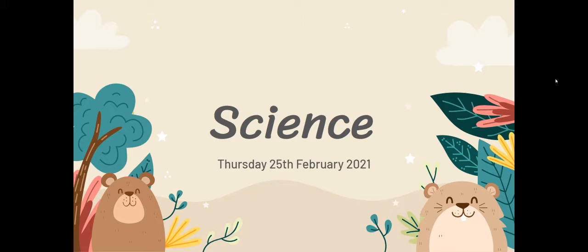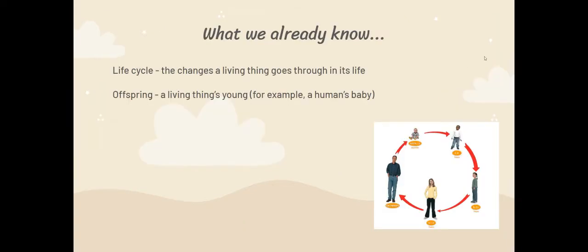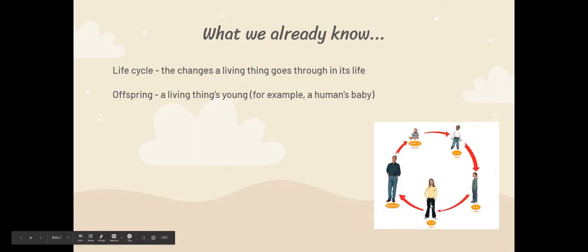But today we're going to think about animals. Here's what we already know from the last half term. The first key term that we learnt was life cycle. The life cycle is the changes a living thing goes through in its life and we looked at how humans change within their lifetime. We start as babies, we turn into toddlers and then children, then teenagers, then adults or elderly and then the life cycle starts again.